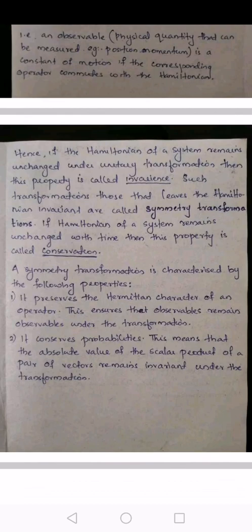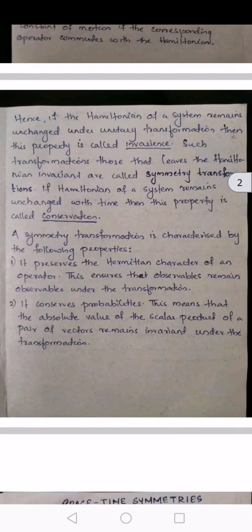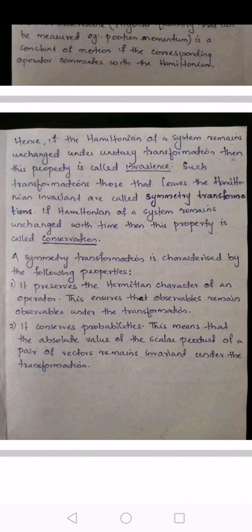A symmetry transformation is characterized by the following two properties: first, it preserves the Hermitian character of an operator, which ensures that the observables remain observables even after the transformation. Second, it conserves probabilities. This means that the absolute value of the scalar product of a pair of vectors remains invariant under the transformation. That means the physical properties remain unchanged even after the transformation.